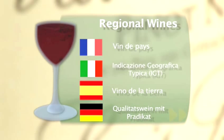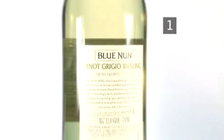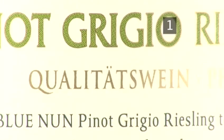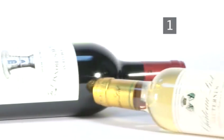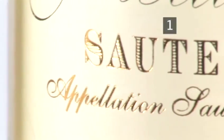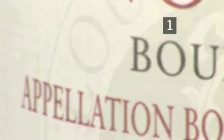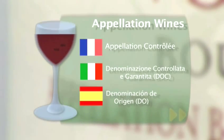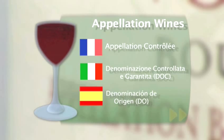Germany also has Qualitätswein mit Prädikat, which means quality wine with distinction. This is a slightly superior wine, but still a regional one. And then there are controlled appellation wines. These are wines made in the manner set out by the region's wine laws, and tend to be the more famous regional wines like Burgundy, Bordeaux, or Chianti. In France it is known as Appellation Contrôlée, in Italy Denominazione Controllata e Garantita, or DOC, and in Spain Denominación de Origen, or DO.